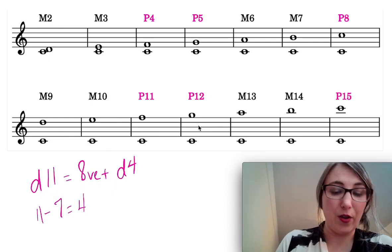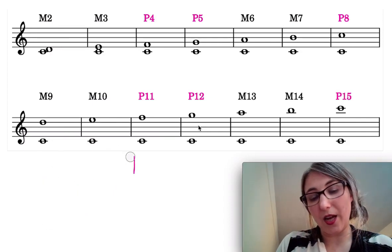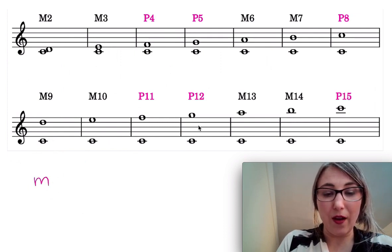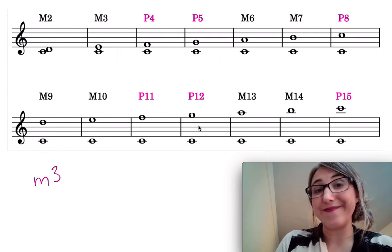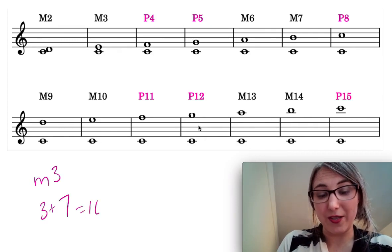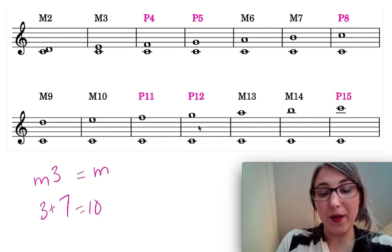I can also, I can go the other way around instead I could say well what is the compound version of a minor third and to find the compound version I just need to take 3 plus 7 then which would be 10 so it would be a minor 10th.